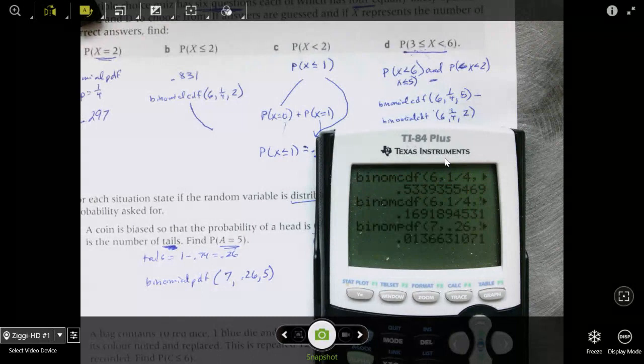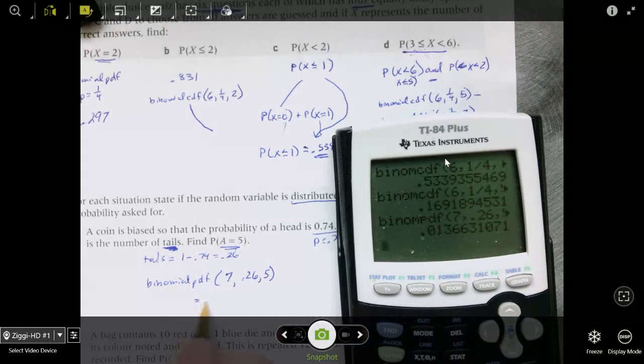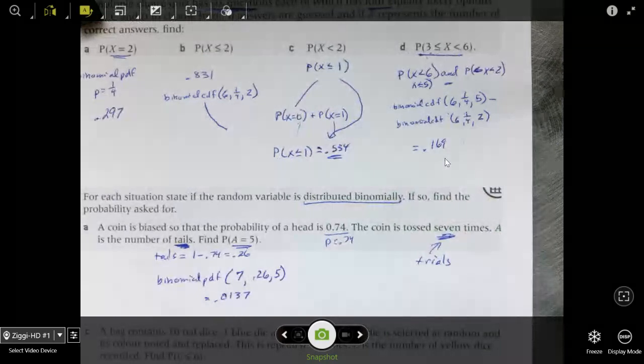So we want to find the number of yellow dice, and it says find that there are 6 or less yellow dice. Okay?